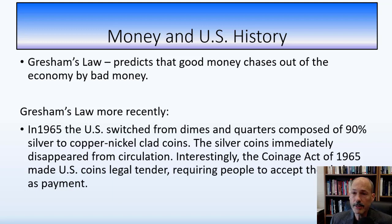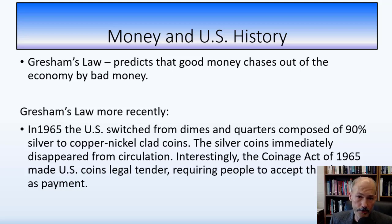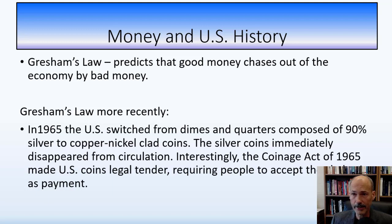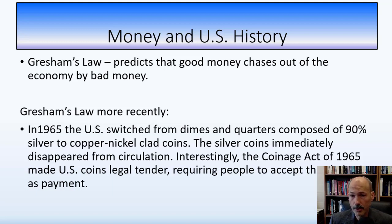A more recent example of Gresham's Law: in 1965, the U.S. switched from dimes and quarters composed of 90% silver to copper and nickel clad coins. The silver coins immediately disappeared from circulation. People realized that four silver quarters were worth far more than a paper dollar, so the coins went into drawers and people transacted in paper money and clad coins. The Coinage Act of 1965 made U.S. coins legal tender because the government worried people might not accept copper-nickel clad coins.